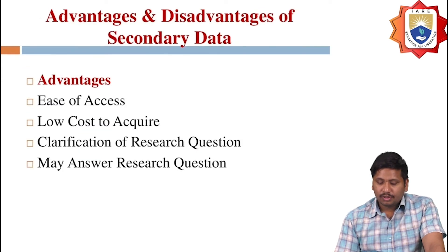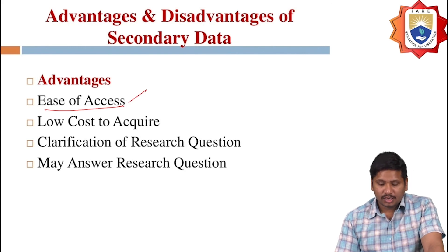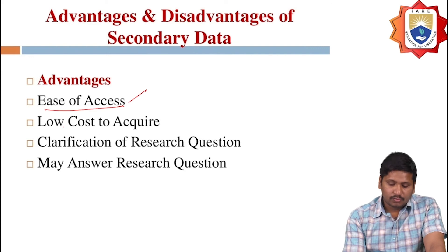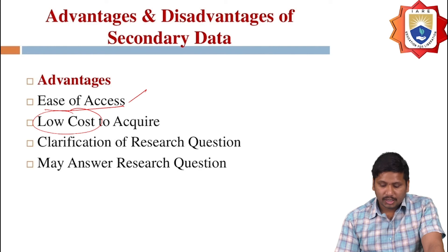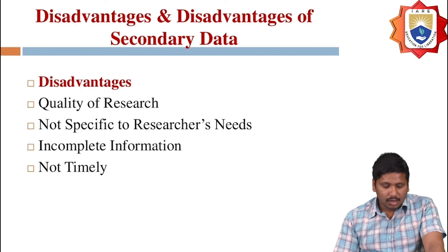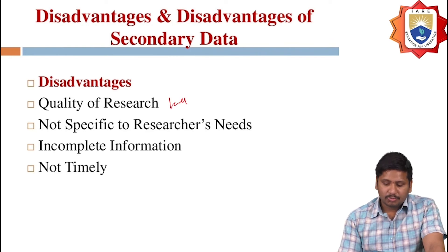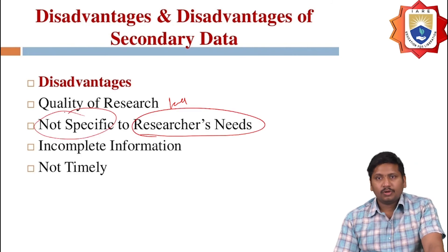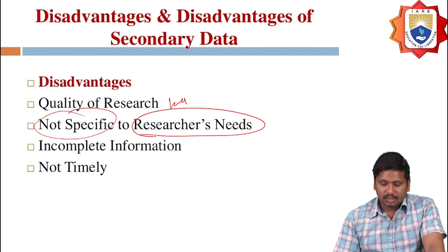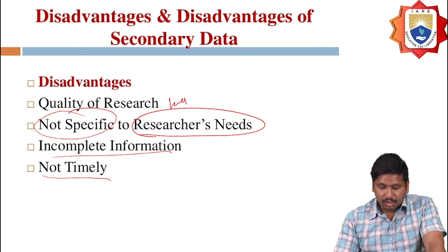The advantages of secondary data are: easy access, low cost to acquire, and the ability to clarify and answer research questions. The disadvantages of secondary data are: lower quality of research, not specific to researcher needs, incomplete information, and not timely. These are the disadvantages of secondary data.